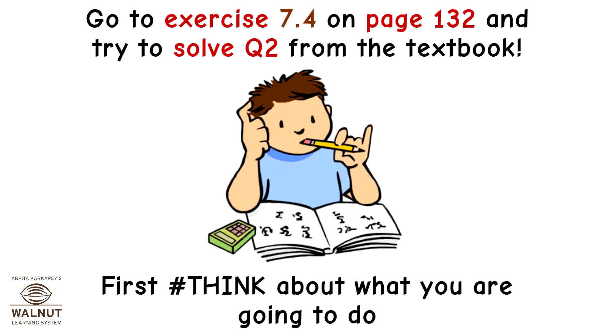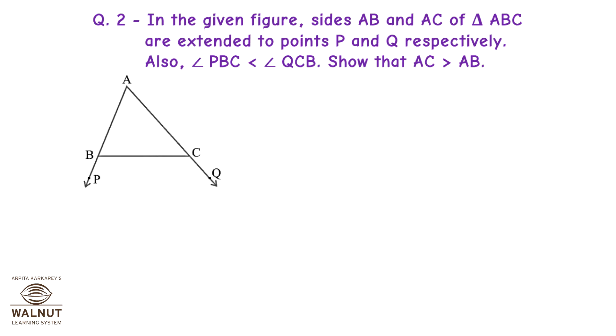Go to Exercise 7.4 on page 132 and try to solve Question 2 from the textbook. First, think about what you are going to do. Question 2: In the given figure, sides AB and AC of Triangle ABC are extended to points P and Q respectively. Also, angle PBC is less than angle QCB. Show that AC is greater than AB.